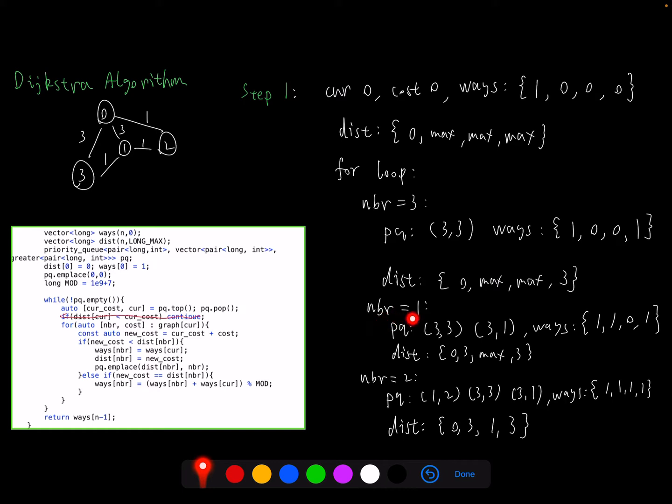We will go through this after we travel all the neighbors of zero. So next neighbor is one. The new cost will be zero plus three, so it's three. We put it in the priority queue, update ways and distance. Same thing for neighbor equal to two. The pair is (1, 2). We put it into the priority queue and update its distance. At this point here, we finish all the neighbors of zero. So we're done with this for loop and we are going to another while loop.